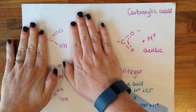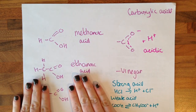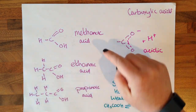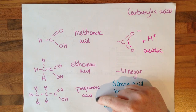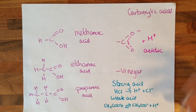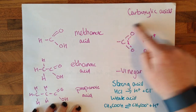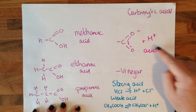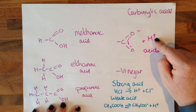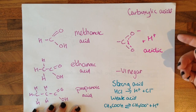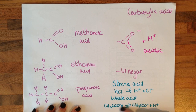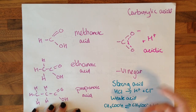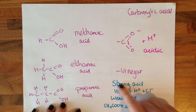Carboxylic acids — this here is our functional group. It needs to be methanoic acid, ethanoic acid, propanoic acid. It's called an acid because when you pop it in water the hydrogen ion weakly dissociates, so it is a weak acid. That's why we have this little bit of reversible reaction here — some of it dissociates, some of it doesn't.